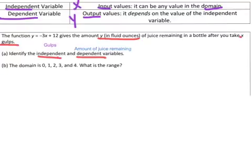Now, in the second part of this problem, they're saying the domain is 0, 1, 2, 3, and 4. What they're telling us to do is plug in all five of these numbers to find out the range. The domain are the X values, the input values, the independent variables, the amount of gulps that we're taking. And then the range is the output, the Y, the amount of juice that's going to be left in this bottle. So, go ahead and make a table and plug in each of these inputs, 0, 1, 2, 3, and 4, and find out your outputs. Pause the video and come back to check your answers.